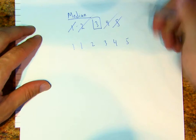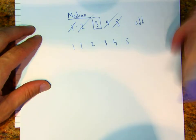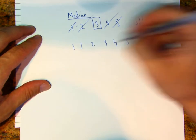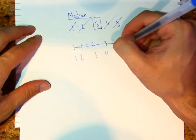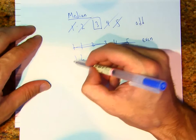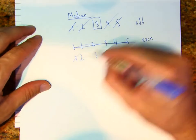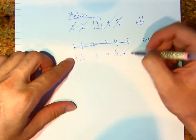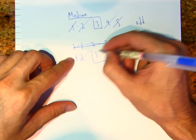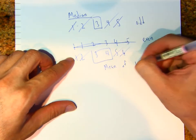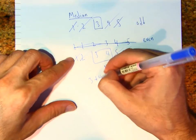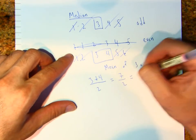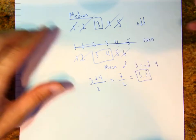Notice how having an odd number of data values means we'll always find one middle point. But if I have an even number of values — like 1, 2, 3, 4, 5, 6 — after canceling from both sides I'm left with 3 and 4. So for the median you take the mean of 3 and 4: that's 7 over 2, which is 3.5. So 3.5 is the median.